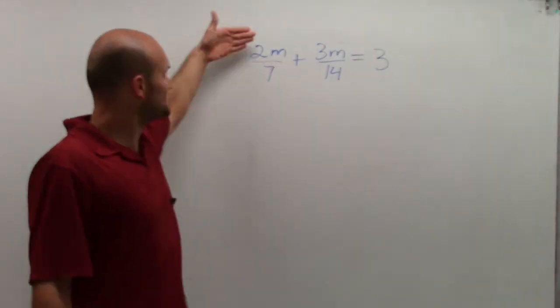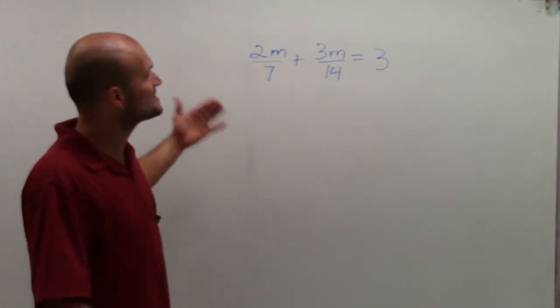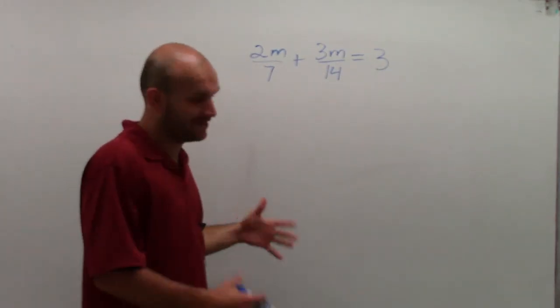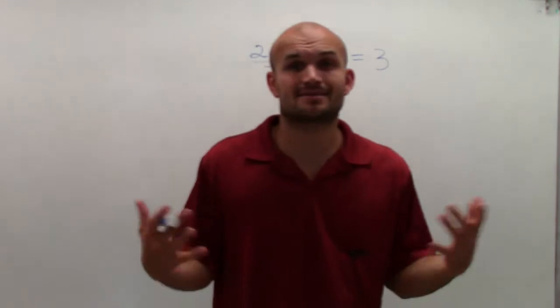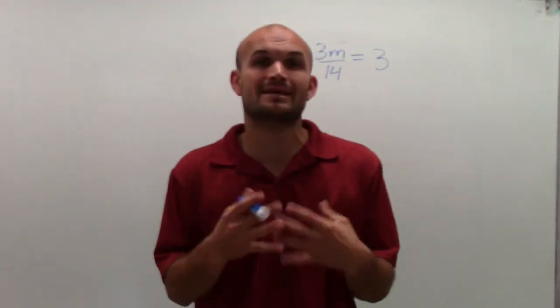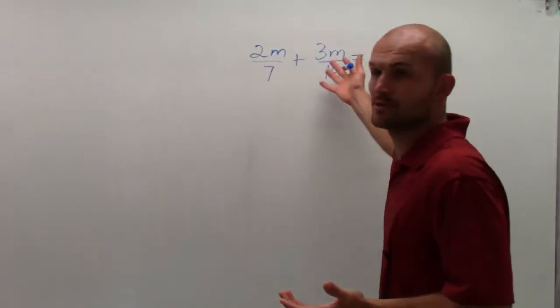Welcome to the lovely problem. 2m divided by 7 plus 3m divided by 14 equals 3. So what we've been working on is combining our like terms. We need to solve for this m. We need to find the value of m that makes this equation true.